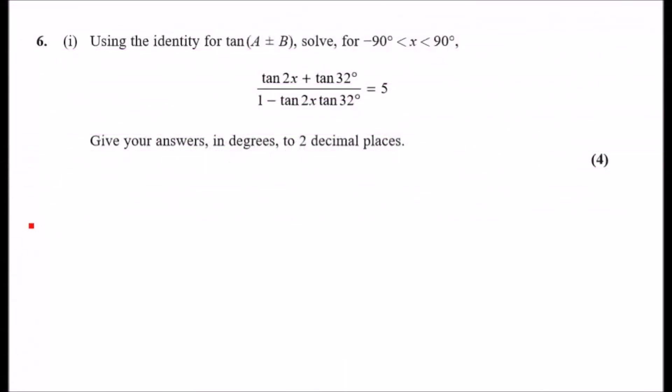Okay, number six: Using the identity for tan(A + B), solve for the given range the following equation. For this one, we have to quickly recognize that tan(A + B), if we expand it, we're going to get the same expression here. So this is identical to tan(2x + 32).